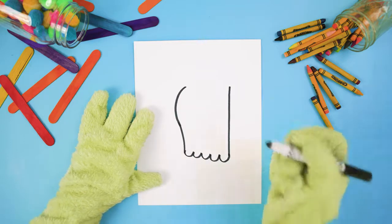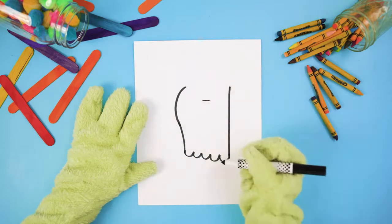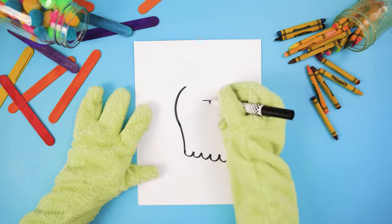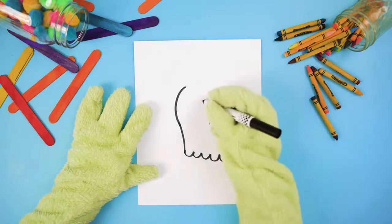Now go back up to the middle of his face and draw a short line across like this. Then one long one going down over here. Now let's connect them with a curved line going out like this.